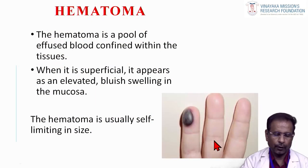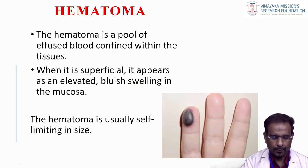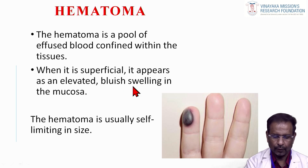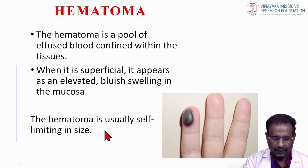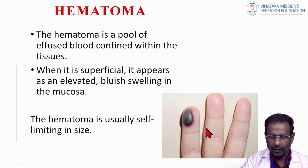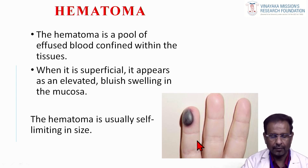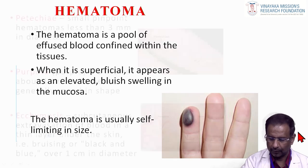Hematoma is a pool of effused blood confined within the tissue. When superficial, it appears as an elevated bluish swelling in the mucosa. Hematoma is usually self-limiting in size and will disappear after a few days or a week. This is a sample picture of a hematoma.